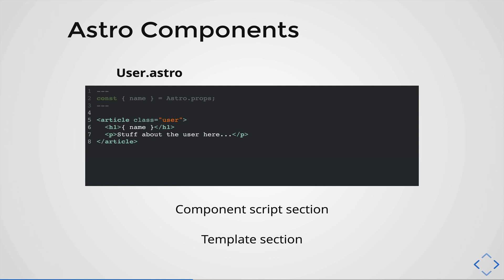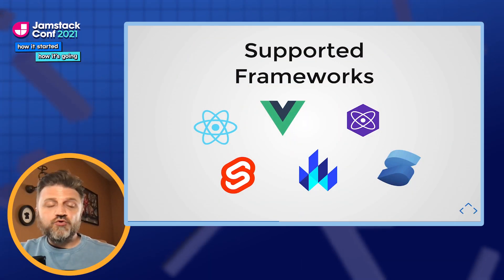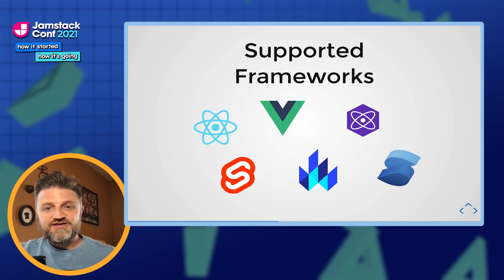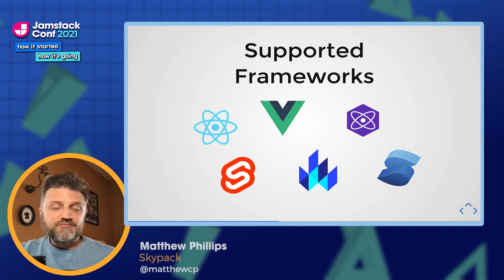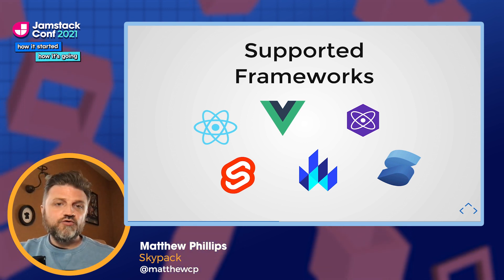One of our goals is that you should be able to copy and paste HTML from the internet into an Astro component and it should work exactly the same. Within an Astro component, you can import a component from any framework — for example, here we're loading a .jsx React component in the script section and using it in the template just like any other component. Out of the box, Astro supports React, Vue, Svelte, Lit, Preact, and Solid.js. Any component framework that can server-side render can work within Astro.